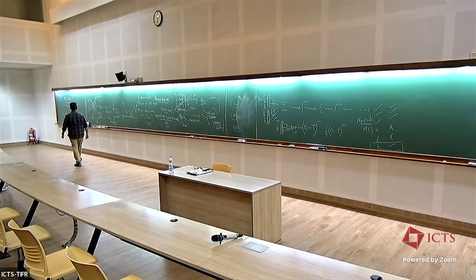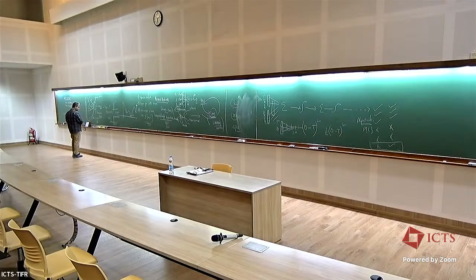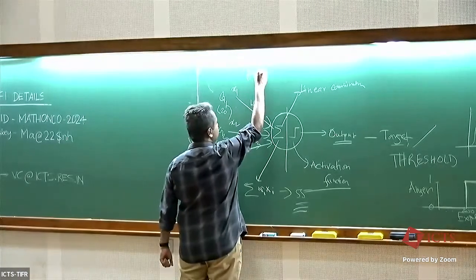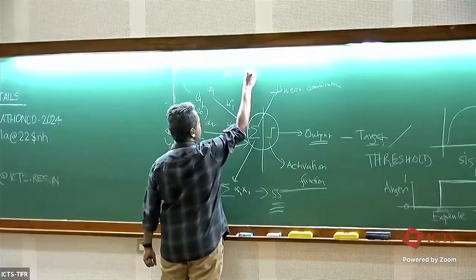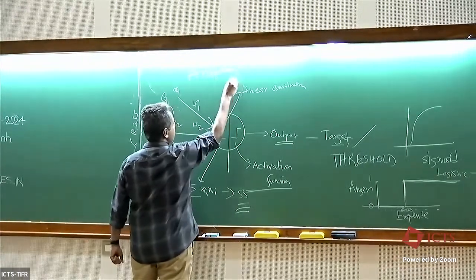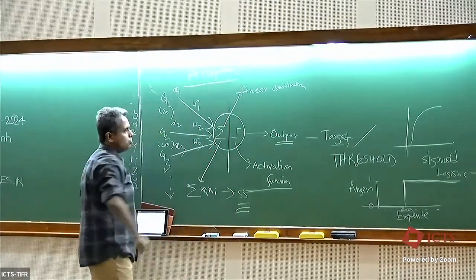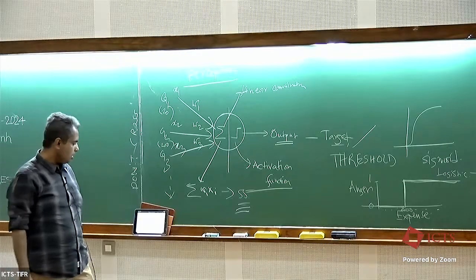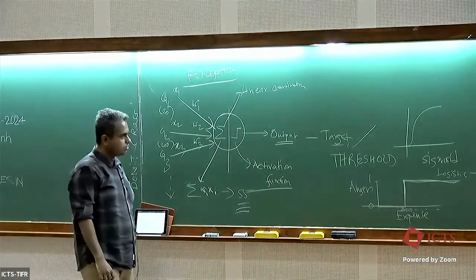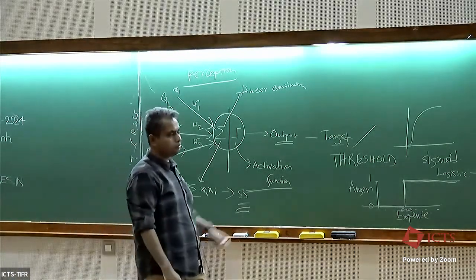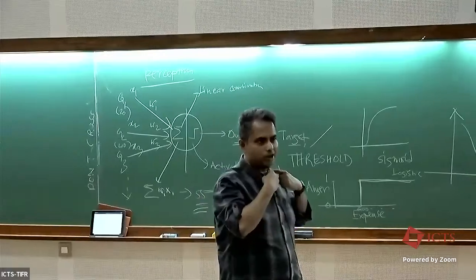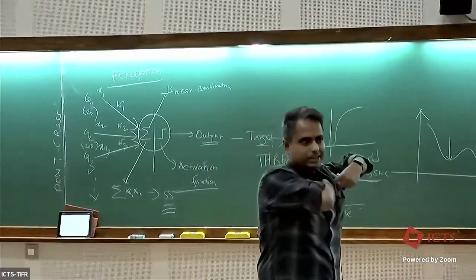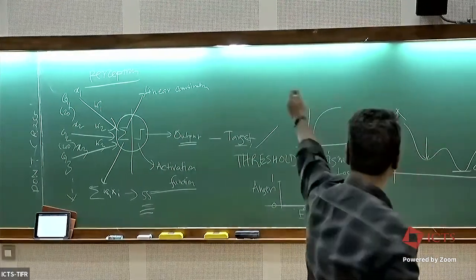This single unit is called a perceptron. Now you know a little bit of neural network. I'll give you a simple algorithm to train it — a simple algorithm to train this single neuron.